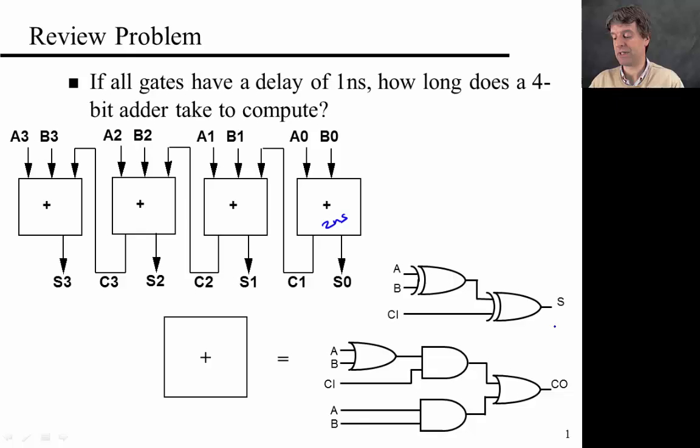And so effectively, the gate delay it takes to compute the sum is just one gate delay once you have A or B, one additional gate delay. And the gate delay for this carry out is going to be essentially, or the overall delay for the carry out is going to consist of two gate delays due to adding this carry in to the OR of A and B and then ORing it together with this A and B. So this is an additional two nanoseconds. So these two are completely identical.